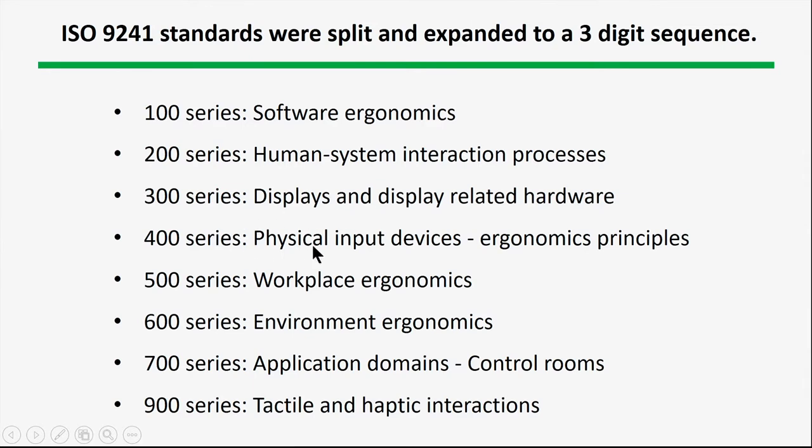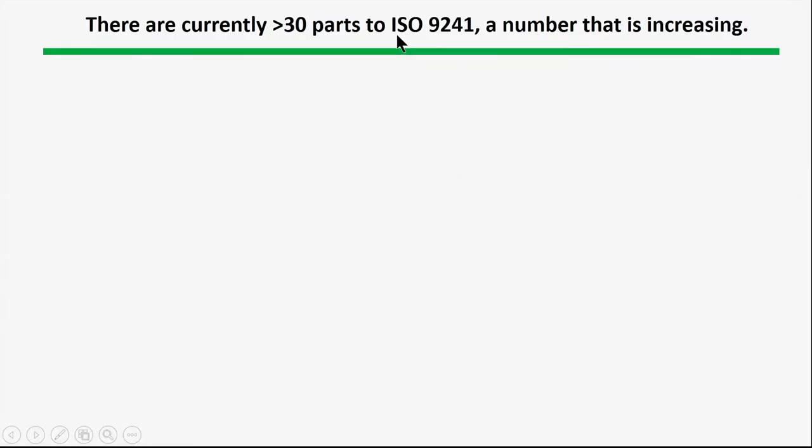Human-system interaction is the area of great interest to us. Displays is of interest. Physical input devices, workplace — industrial engineers are interested in that — and environmental ergonomics. There are also a number of specialized documents, including haptic and tactile interactions, a series of standards that most people don't know much about. Currently there are about 30 parts to ISO 9241, and the number keeps going up.